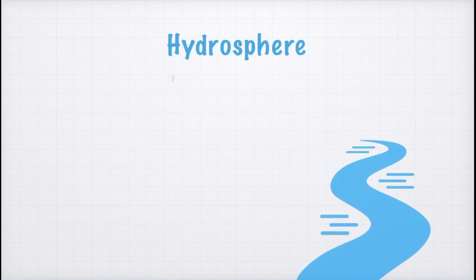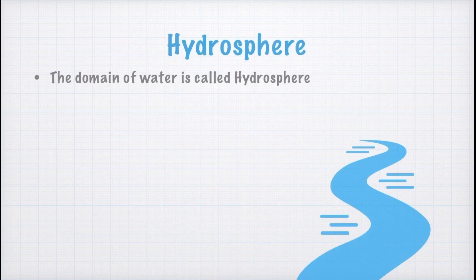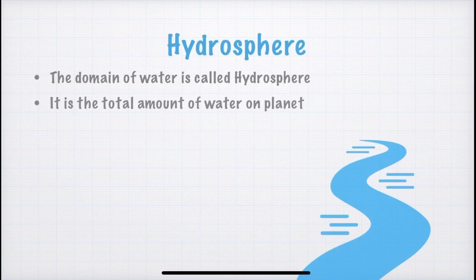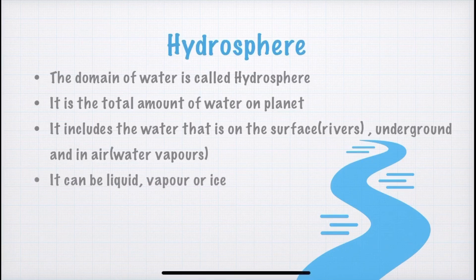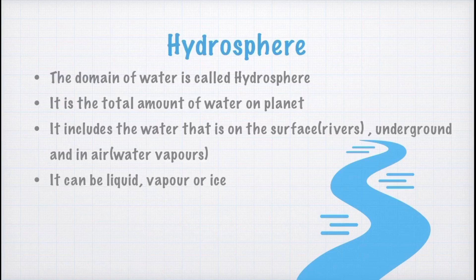After covering lithosphere, next we have the domain of water — hydrosphere. Hydrosphere is the total amount of water on earth; all the water on earth together makes hydrosphere. It includes surface water such as water in rivers and lakes, underground water, and water in the air — that is, water vapour. From this we can deduce that hydrosphere can be liquid, gas, or solid — that is, water can be in vapour form, liquid form, or ice form.